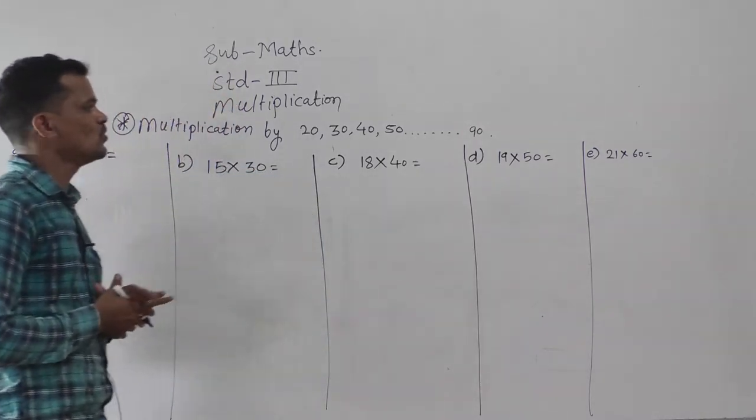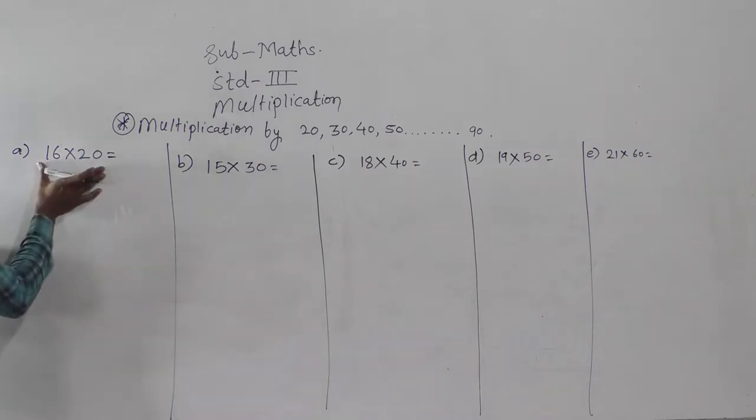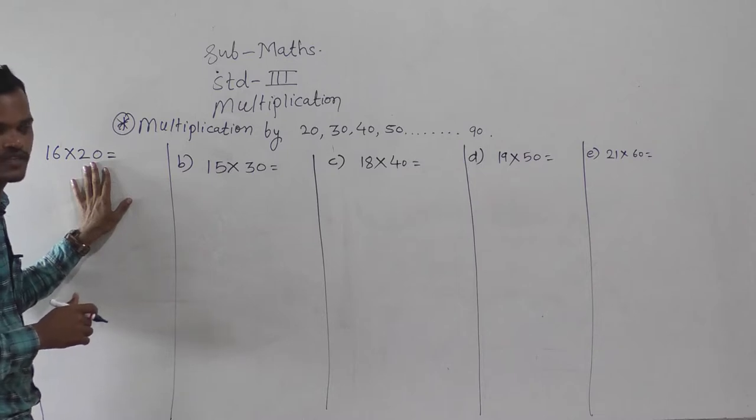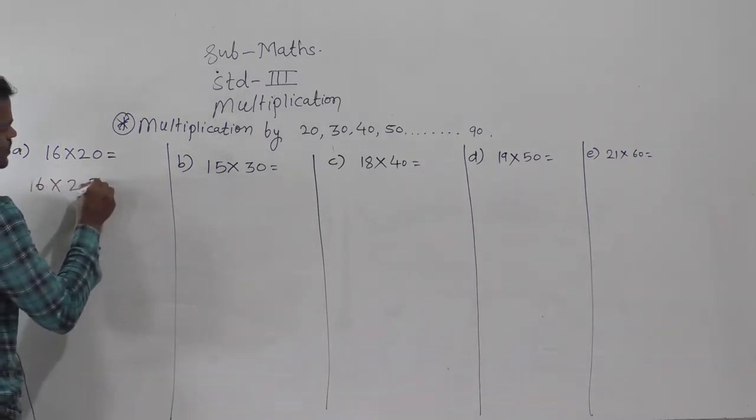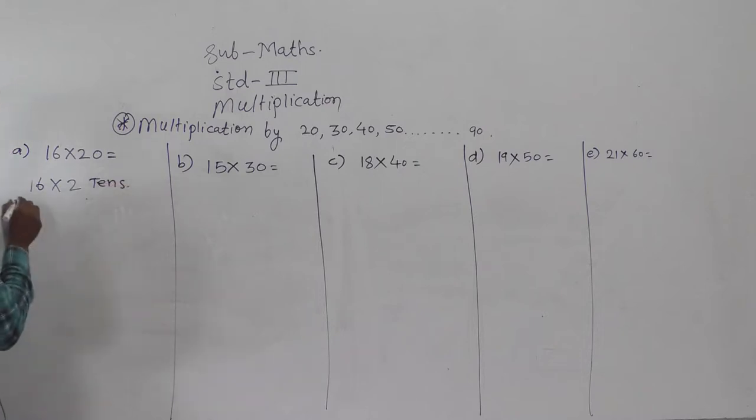So see here how to multiply a number, 16 multiplied by 20. So you know 20 means 2 tens, so write 16 into 2 tens. Now if you know the table of 16, you can directly do multiplication.